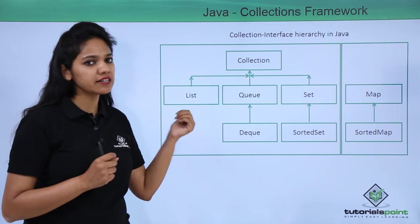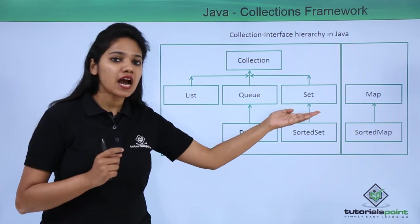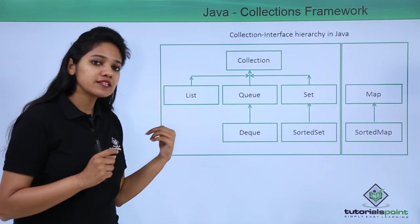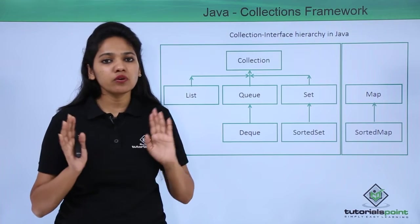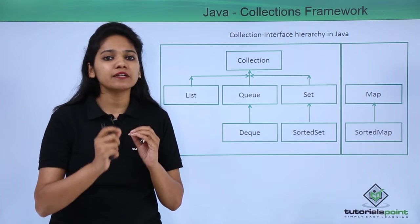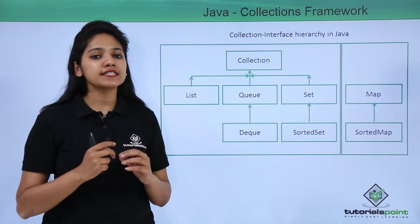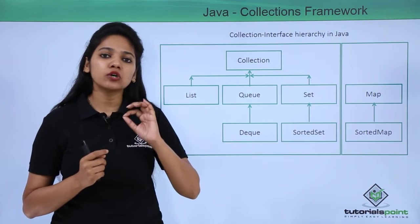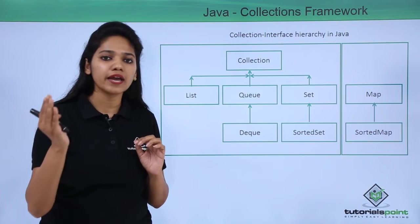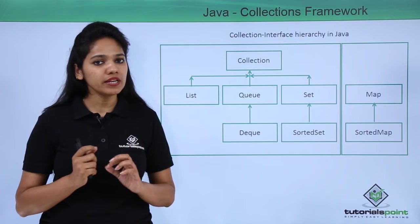Next, let us consider List. Unlike Set, which says duplicacy of elements is not allowed but does not guarantee order, in the case of List it says: I don't restrict duplicacy of elements, but I guarantee you the order — the sequence of elements in which they will appear. It says that whether you want to insert or delete at a particular point, it can tell you where to go and add or delete. That is, it guarantees the order in which elements will appear.